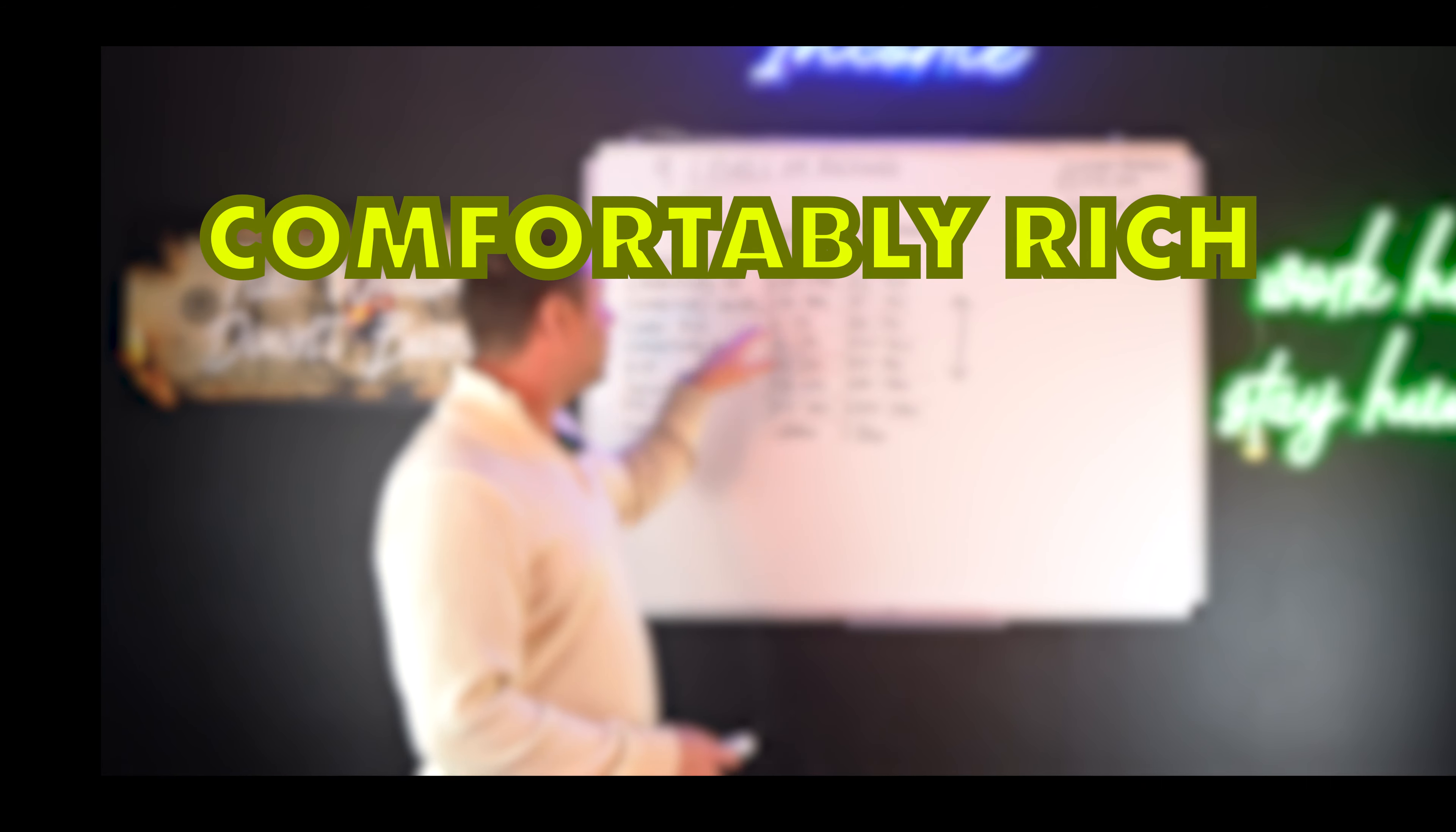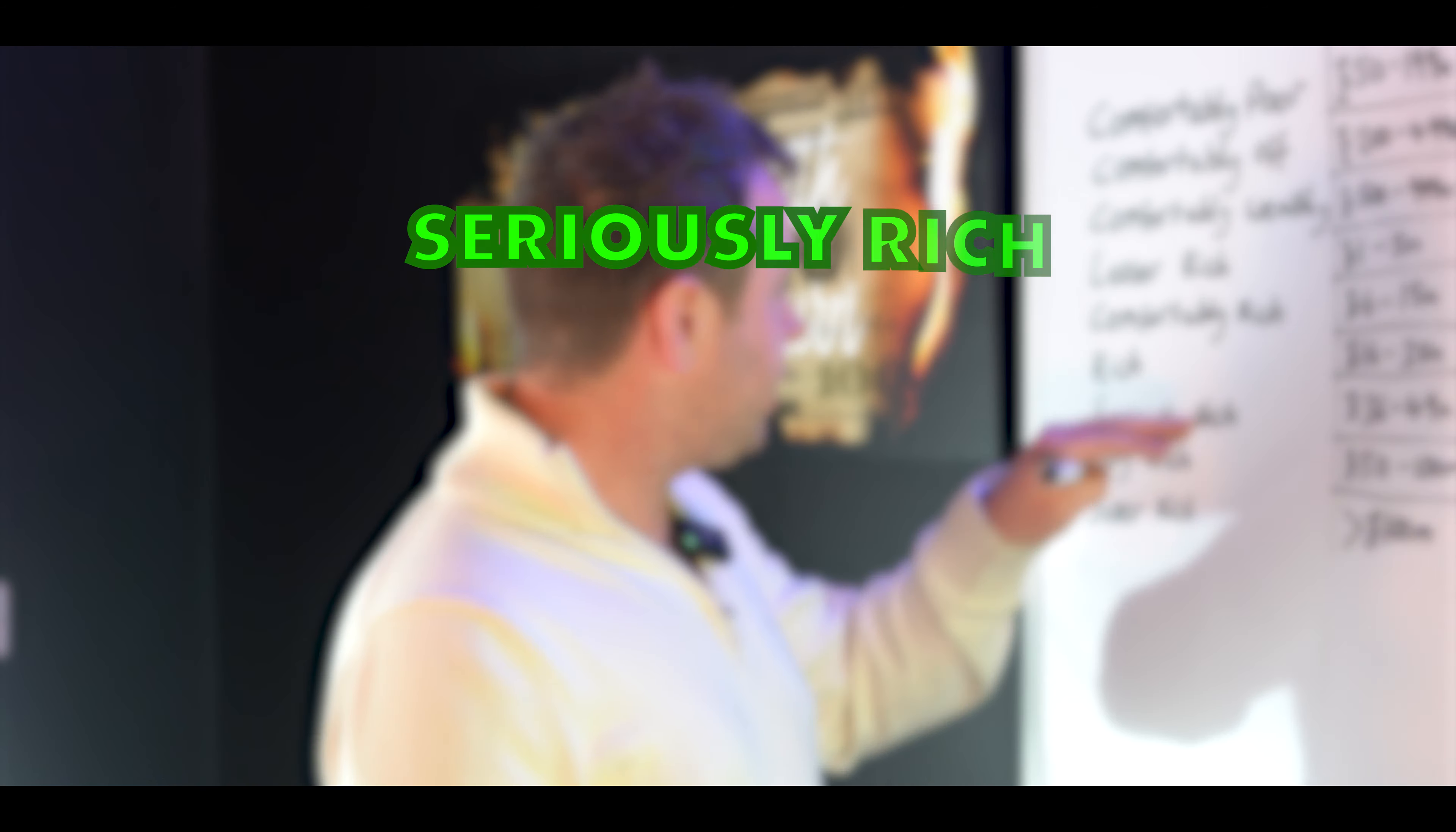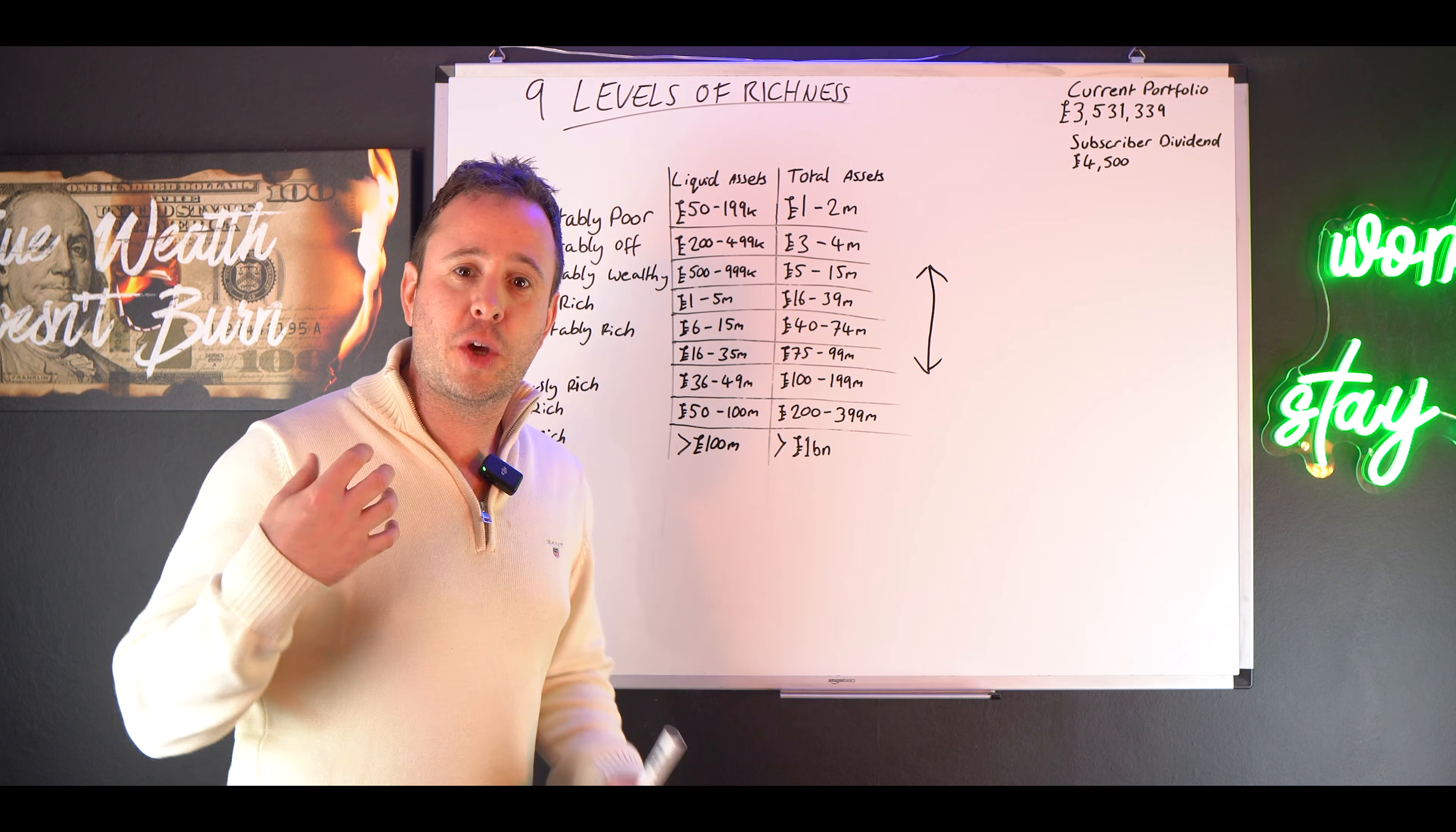Once you get over 100, 200, 300 million, then you're able to partake in the more expensive side, which would be the super yachts, the jets. The only difference here is really the charity donations, the amount that you can give away. So the next one on our list is comfortably rich, 6 to 15 million, 40 to 74 million in total assets. Then we've got the first level of actual richness, which is 16 to 35 million in liquid and 75 to 100 million in net worth. And I very, very much hope to be there in the next 5 to 10 years.